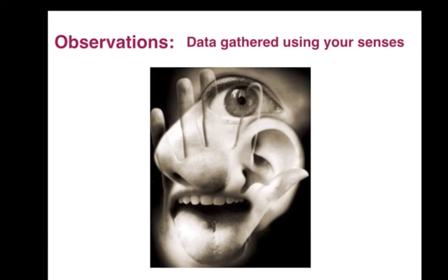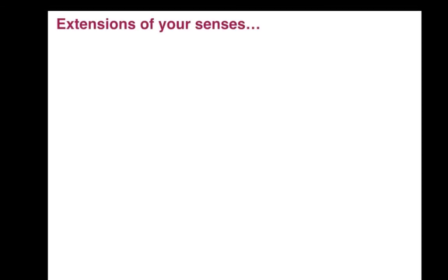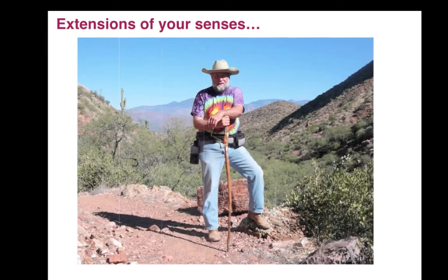The primary senses are sight, smell, taste, hearing, and touch. There are plenty of other senses in your body, but those are the five primary ones. However, you can also make observations with extensions of your senses.